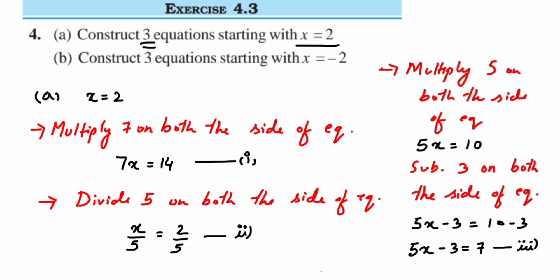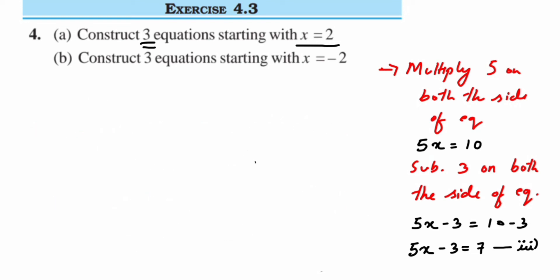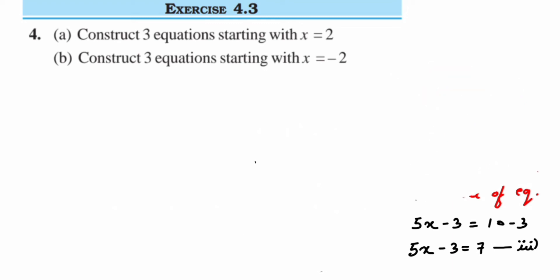Now for the second part, we can do the same thing but starting with x = -2. You could apply the exact same steps — the answer will just get a minus sign on the right-hand side. But let's try a few more steps and take some different numbers instead.